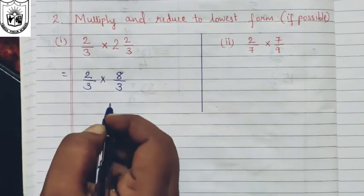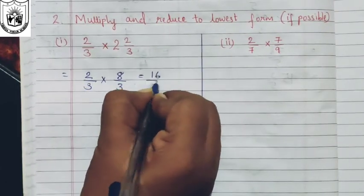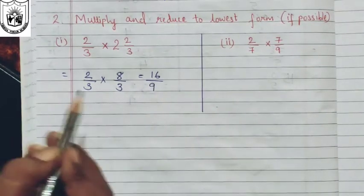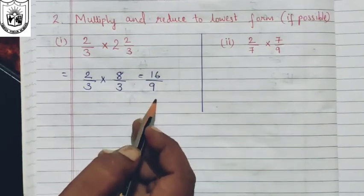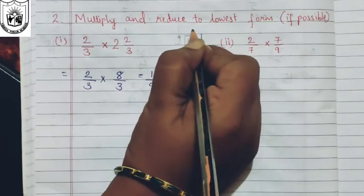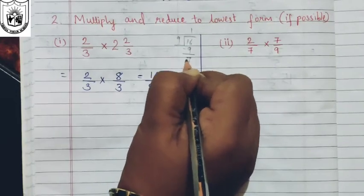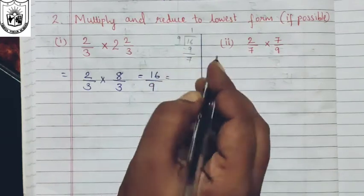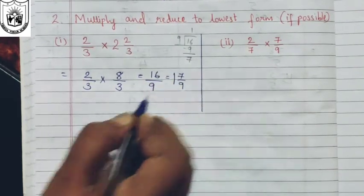Now let us multiply the fractions. So we will have two times eight are sixteen, and three times three are nine. Now sixteen upon nine is an improper fraction, so the final answer you can write as a mixed fraction. Nine goes into sixteen once — nine ones are nine — with seven remaining. So you write it as one and seven-ninth.